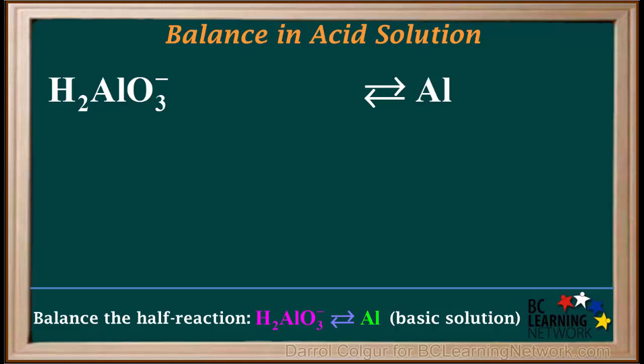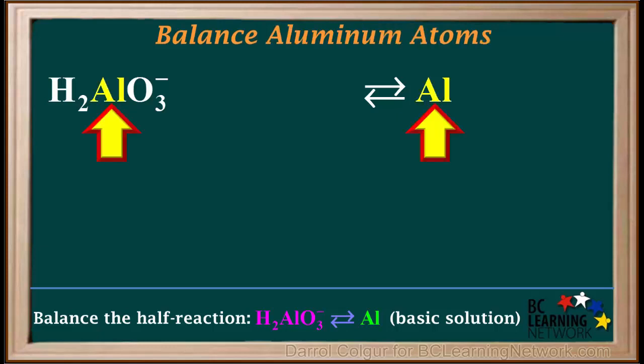We begin by balancing atoms other than hydrogen or oxygen. In this case, the element is aluminum. We have one Al on each side, so aluminum atoms are already balanced.